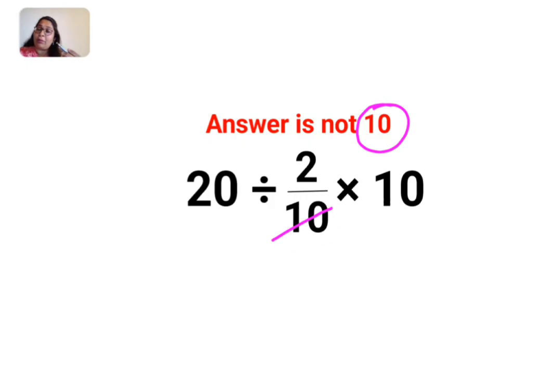So the first operation which we'll normally do is 10 and 10 gets cancelled. So we are left with 20 divided by 2. Answer is 10. No, that's not how these things are supposed to be done.